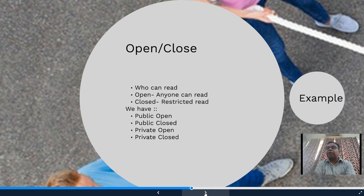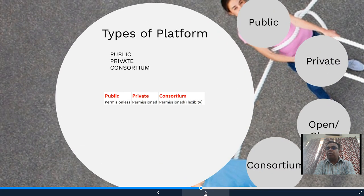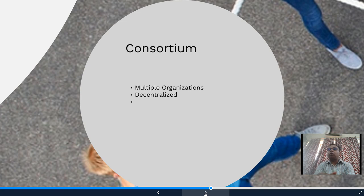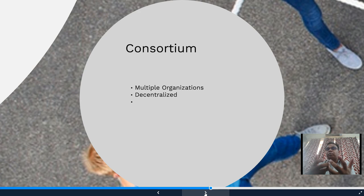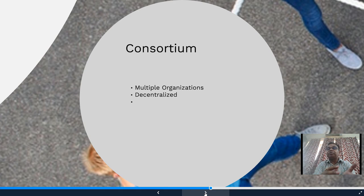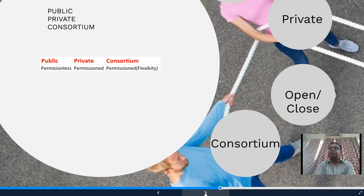Depending on the application, we call it an open or closed platform. Now, to conclude — a consortium blockchain platform is similar to a private blockchain platform, but the key difference is that in a private blockchain a single organization controls it, whereas in a consortium blockchain platform more than one organization collaborates and jointly controls the platform. Therefore, it is fully decentralized — not partially — because more than one organization is controlling it.